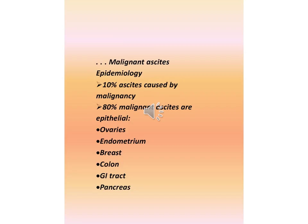Malignant ascites epidemiology: 10% of ascites cases are caused by malignancy. 80% of malignant ascites are epithelial in origin, arising from the ovaries, endometrium, breast, colon, GI tract, and pancreas.